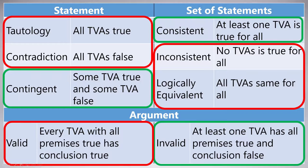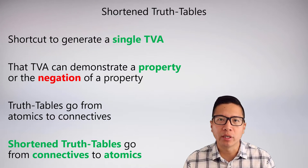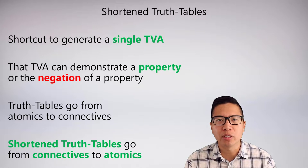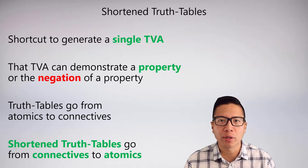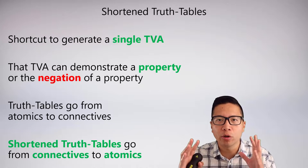For consistency, if we had a single TVA that showed all the sentences were true, that's enough to know the set is consistent. And for invalid, if we had a single TVA which showed all the premises are true but the conclusion is false, then we have enough information to know that the argument is invalid. We can actually use this and invoke what's called a shortened truth table — essentially a shortcut just to generate a singular TVA. This is really nice because then we can demonstrate all those properties in green.